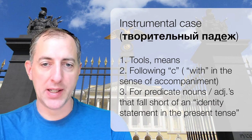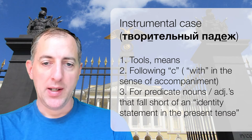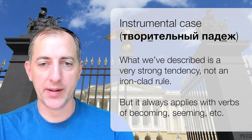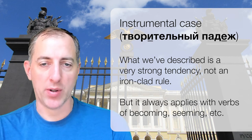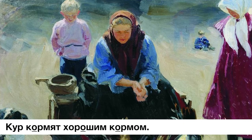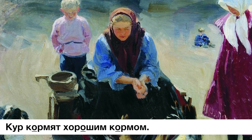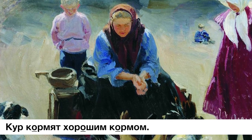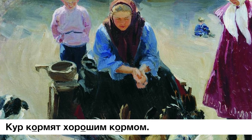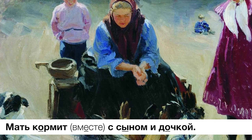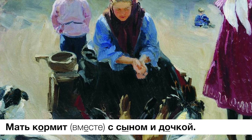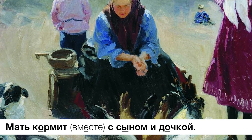Let's look at simple examples — try to spot the instrumental. Кур кормят хорошим кормом — they're feeding the chickens with good feed. What are they using? Хорошим кормом — instrumental. Мать кормит с сыном и дочкой — the mother is feeding along with her son and daughter. She's not using them as tools, so we need с for accompaniment followed by instrumental: с сыном и дочкой. Куры скоро станут толстыми — the chickens will soon become fat. There's a verb of becoming; they're not fat right now but will become so. We get our predicate in the instrumental: толстыми.